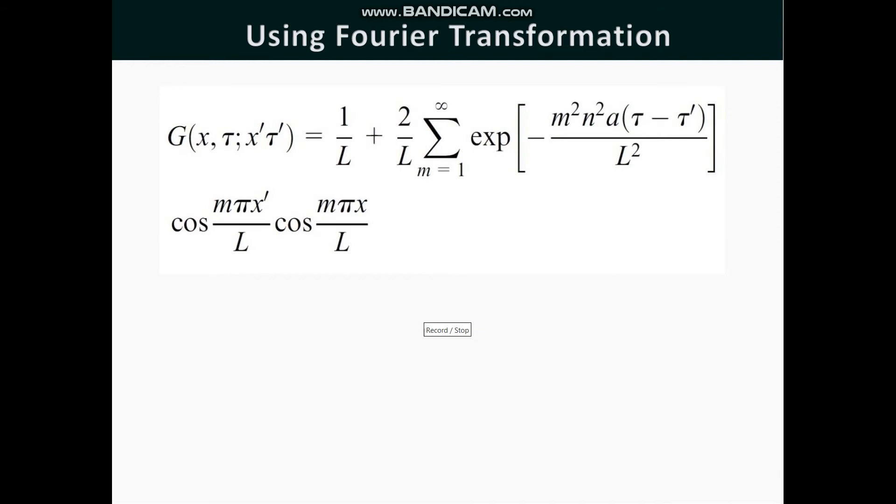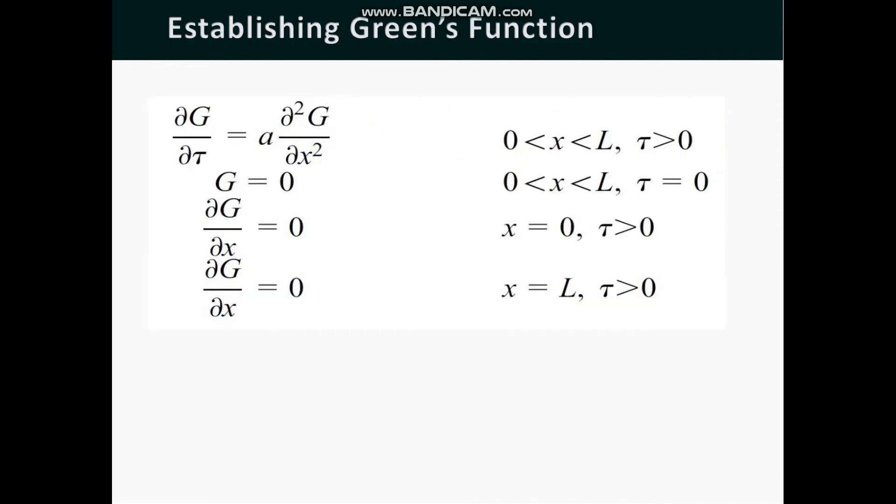Now, we will establish the Green's Function and we can see that ∂G/∂τ = α ∂²G/∂x² for all x ranging from 0 to L and τ > 0. G = 0 for x ranging from 0 to L for τ = 0. ∂G/∂x = 0 for x = 0 for all τ > 0, and ∂G/∂x = 0 for x = L for all τ > 0. In the above equations, λ and L are the thermal conductivity coefficient and the thickness of the wall and α is the thermal diffusivity.